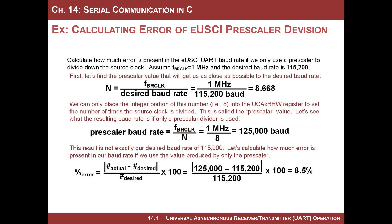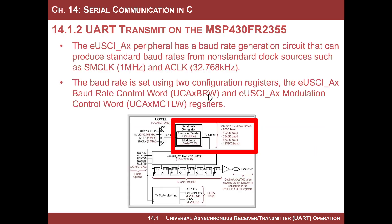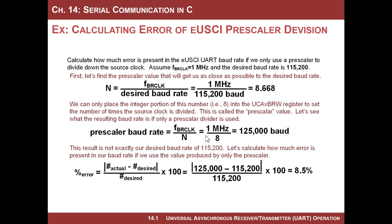Let's do a calculation to see how close we can get using just the pre-scaler, and then look at what kind of error we see in the bit stream. Let's say we chose the SMCLK as our clock source at one megahertz, and I decide I want to achieve 115,200 as my baud rate. To calculate the integer for the baud rate control word register, I take the frequency divided by the desired baud rate: one megahertz divided by 115,200 gives me 8.668.